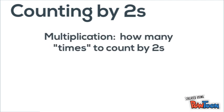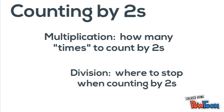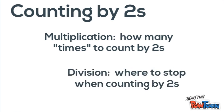So to sum it all up, we can count by twos to solve both multiplication and division equations. Multiplication tells us how many times to count by twos, and division tells us where to stop when counting by twos. So remember that next time you see these, you'll be an expert mathematician. Thanks for watching. Peace out.